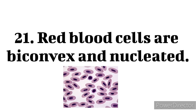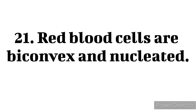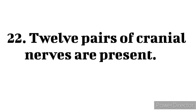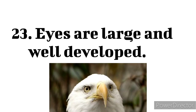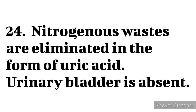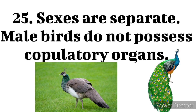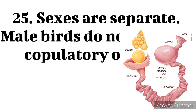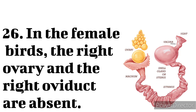23. Red blood cells are biconvex and nucleated. 24. Twelve pairs of cranial nerves are present. 25. Eyes are large and well developed. 26. Nitrogenous wastes are eliminated in the form of uric acid. Urinary bladder is absent. 27. Sexes are separate. Male birds do not possess copulatory organs. 28. In the female birds, the right ovary and the right oviduct are absent.